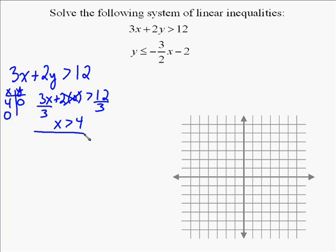Put 0 in for x to find the y-intercept. And so that 3 times 0 is going to cancel out, so you end up with just 2y greater than 12. So it's very easy to solve, just divide both sides by 2. And that allows us to get y greater than 6, so our cutoff point is 6.